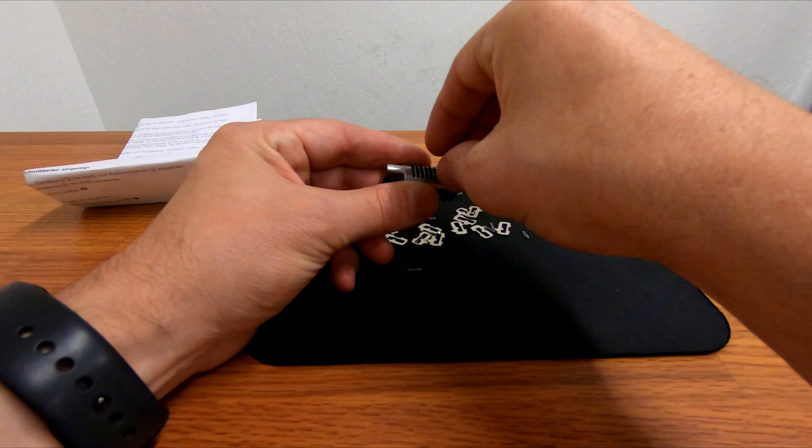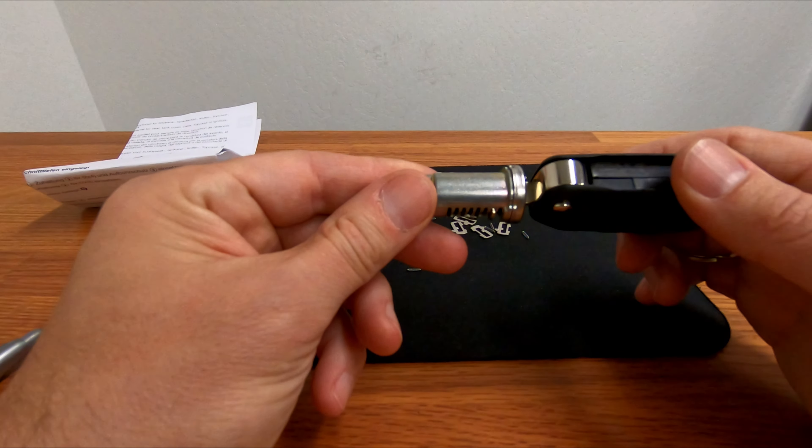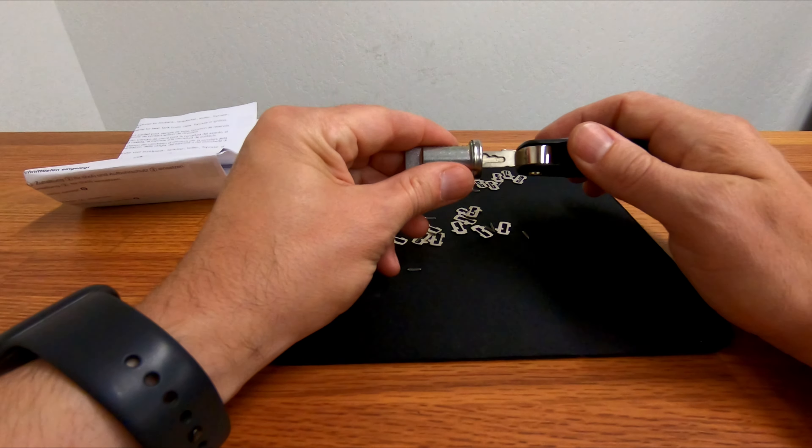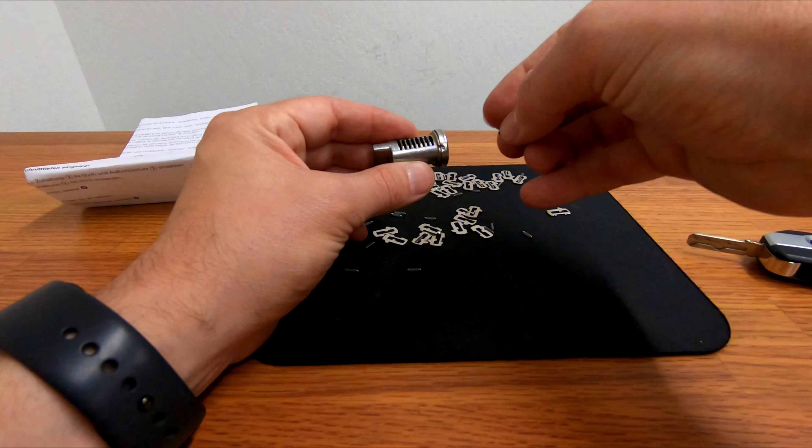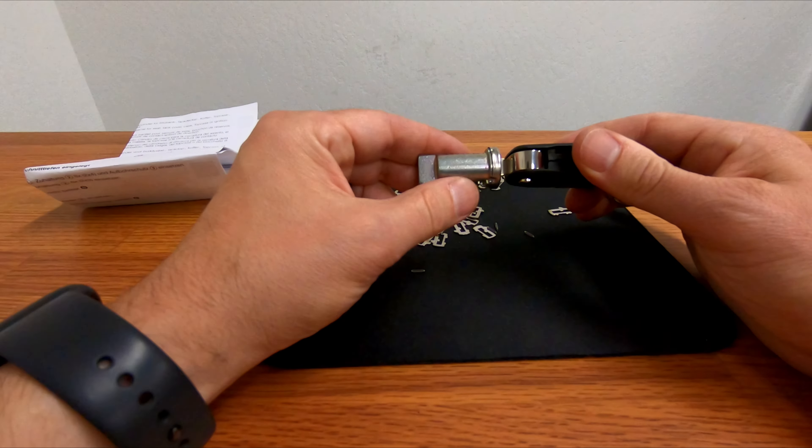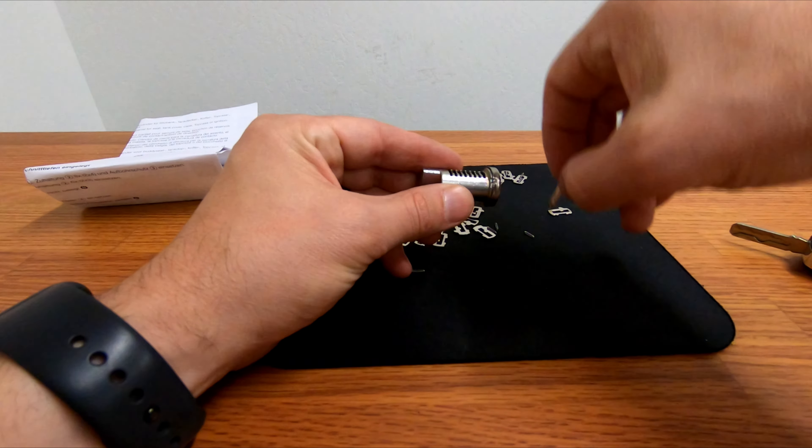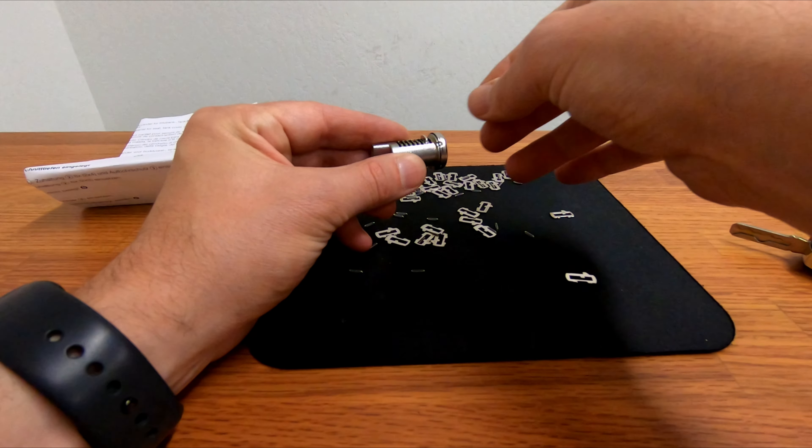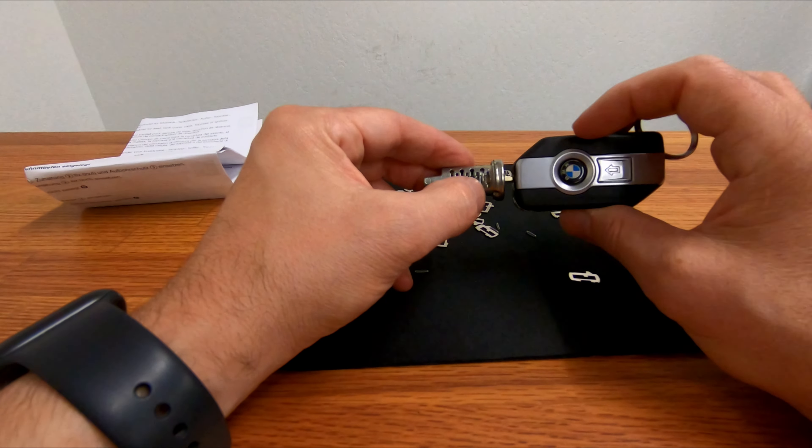So let's drop a number three. Does a number three work? No, it does not. You can see here it's hanging out the bottom by quite a bit. So let's try a number two. Does a number two work? No, it does not. The good thing about these lock cylinders is it's just one, two or three. So you have three choices and you go through and you try one at a time until you get nice and flush. And there it is. So this is a number one.